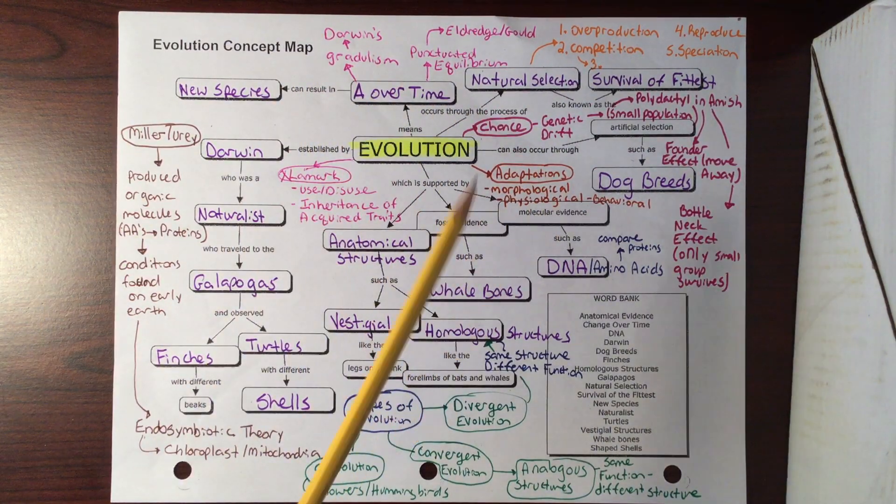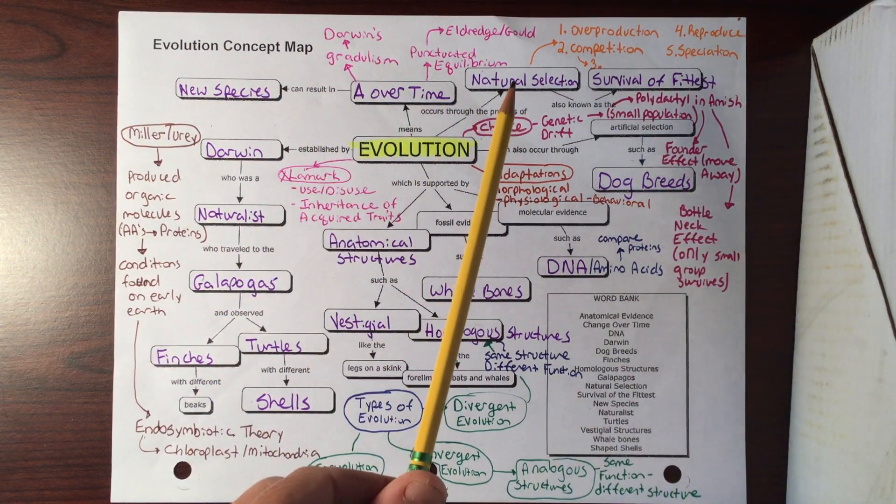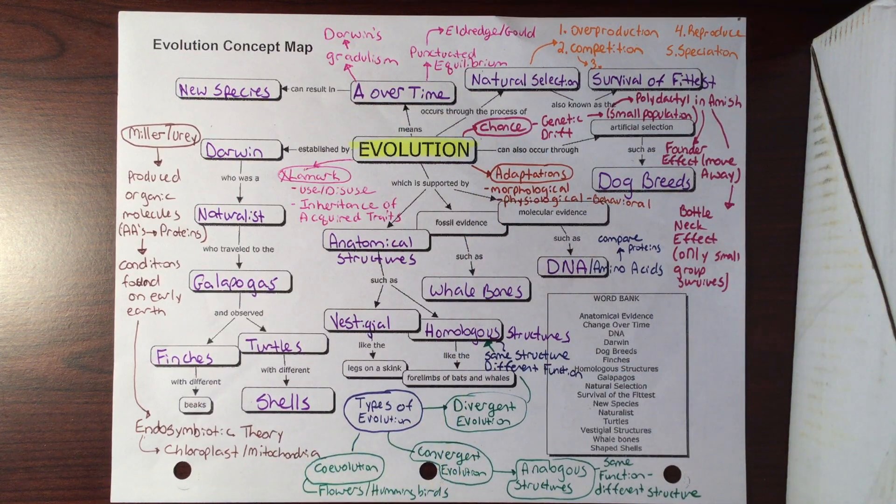We know that evolution occurs through the process of natural selection. That was Darwin's idea of evolution, and there were five points that went along with it. These five points go in order. We talked about how organisms overproduce because not all of them are going to be able to survive.